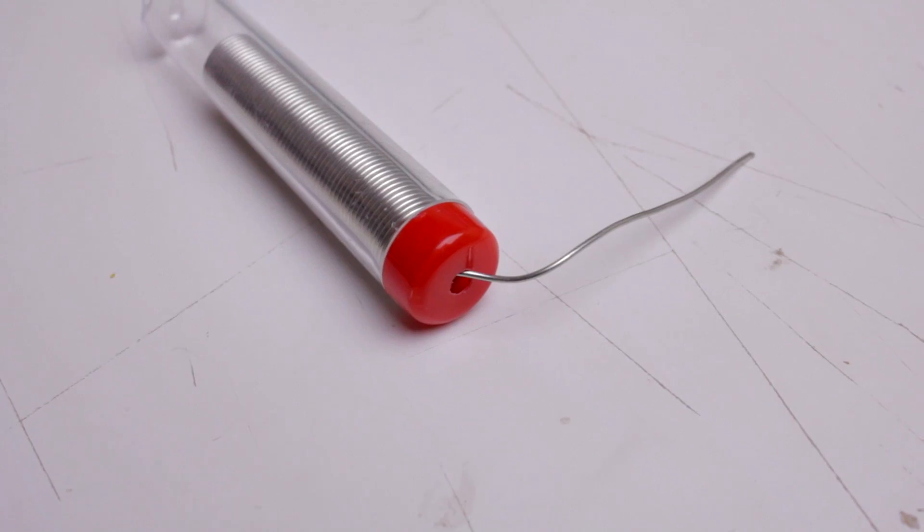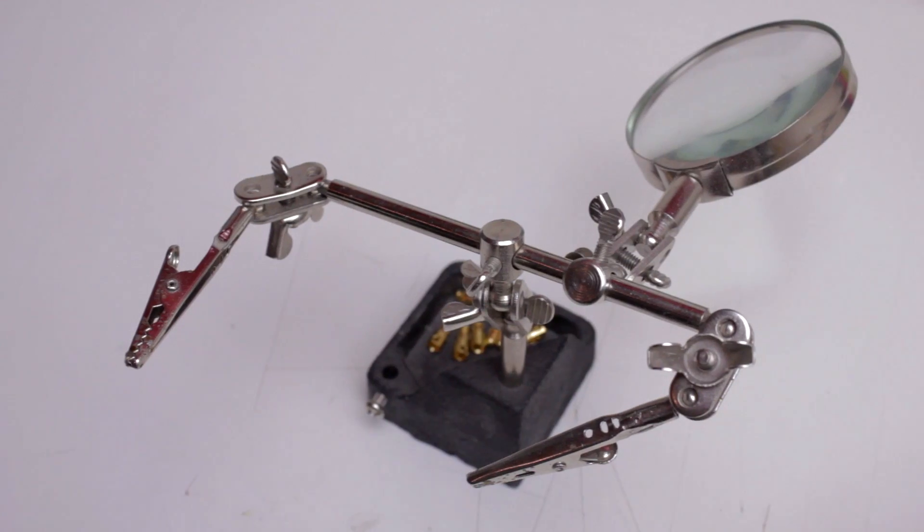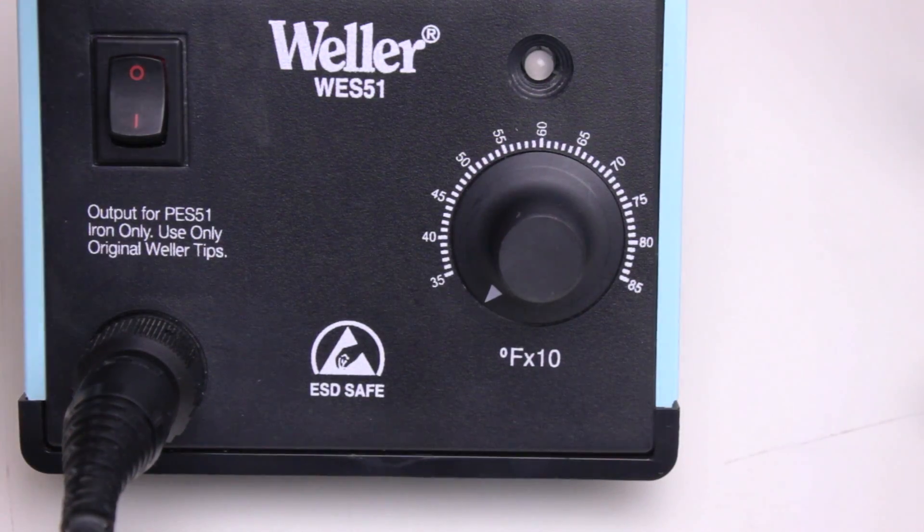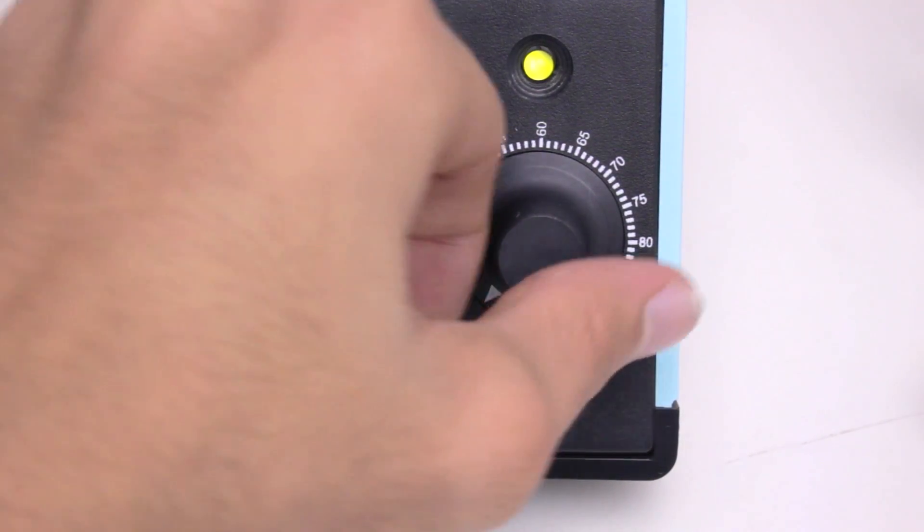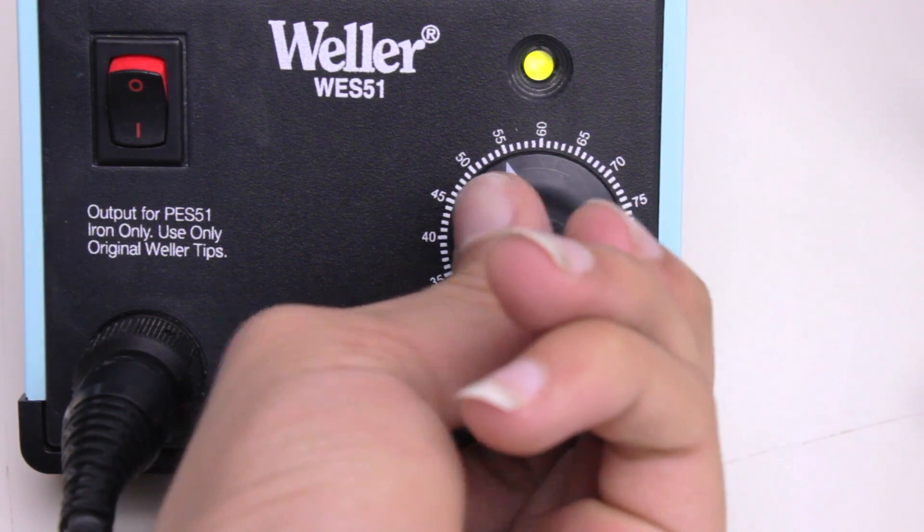Before we turn the iron on, we're going to need some 60-40 rosin core solder and possibly some helping hands. After that we can turn our soldering station on and turn it to about 550 degrees Fahrenheit.